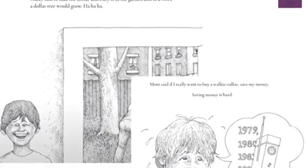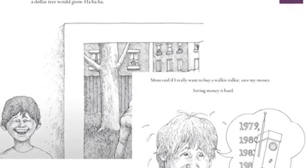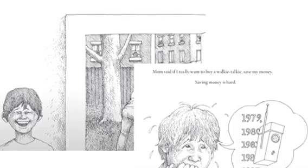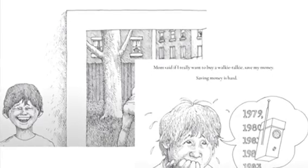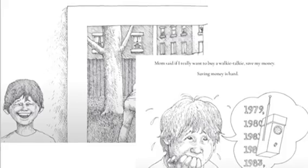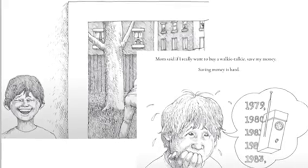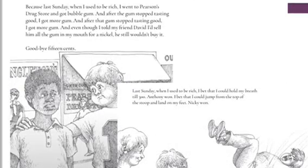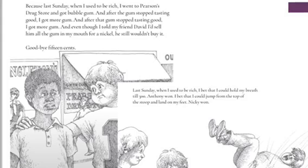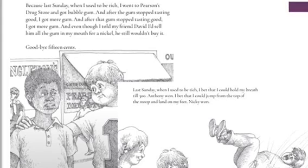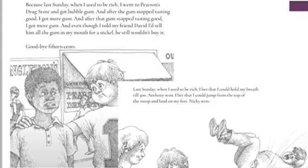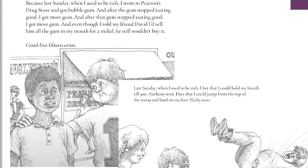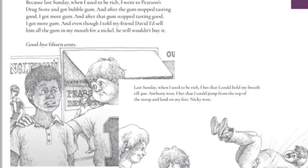Nick said to take the dollar and bury it in the garden, and in a week a dollar tree would grow. Mom said if I really want to buy a walkie-talkie, save my money. Saving money is so hard. Why do you think Alex feels that saving money is so hard? Because last Sunday, when I used to be rich, I went to Pearson's Drugstore and got bubble gum. And after the gum stopped tasting good, I got more gum, and after that gum stopped tasting good, I got more gum. And even though I told my friend David I'd sell him all the gum in my mouth for a nickel, he still wouldn't buy it. Goodbye, 15 cents.